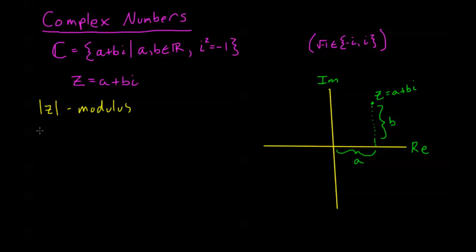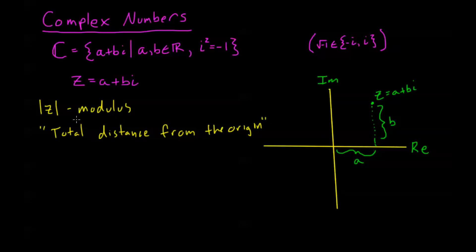The modulus can be thought of as the total distance from the origin. So we're kind of expanding — absolute value in real numbers is the total distance from 0 on the number line. Now in complex numbers, we don't have a number line; we have a number plane called the complex plane. So the absolute value of a number z, if I have this point z up here on the plane, where a is my real value and b is my imaginary, this modulus is going to be the total distance from the origin, or the total distance from z to the point (0, 0). So this line that I just drew in here is my modulus of z.